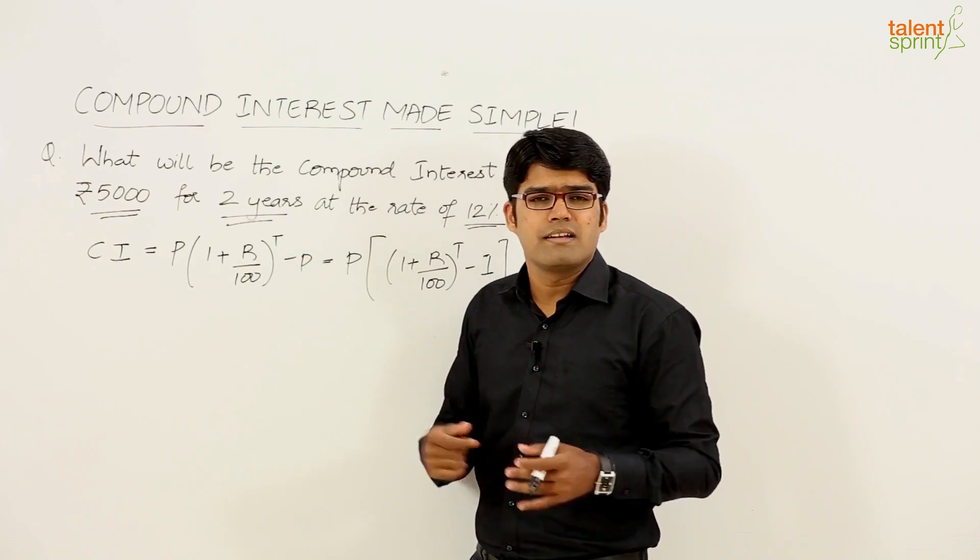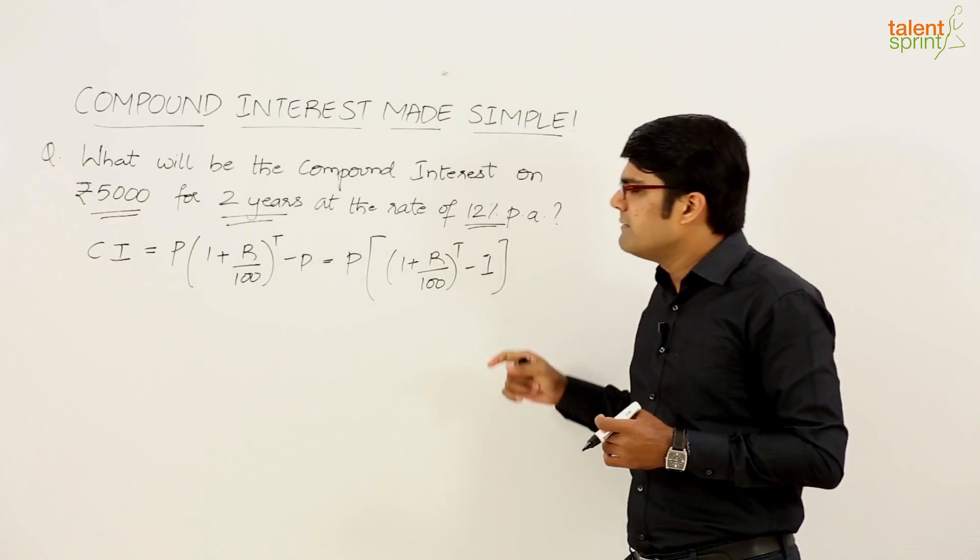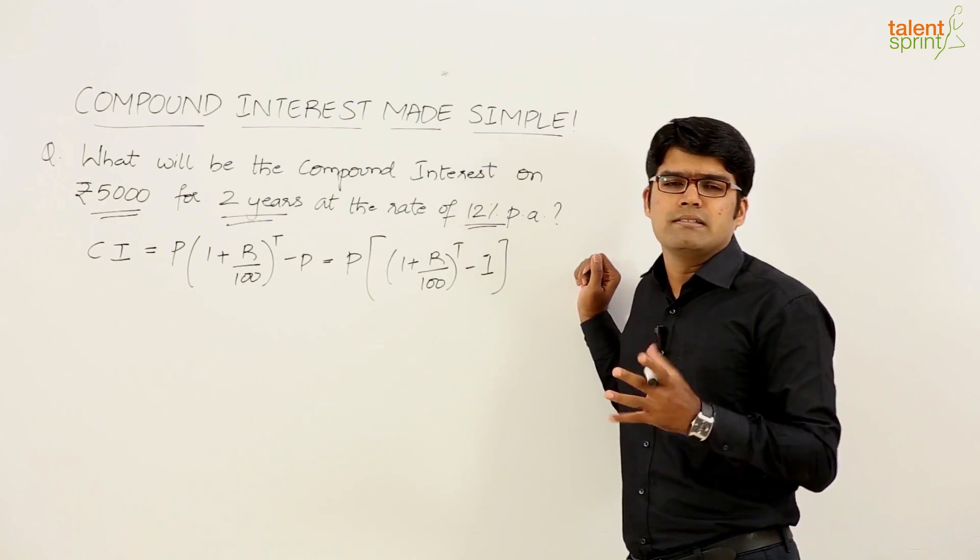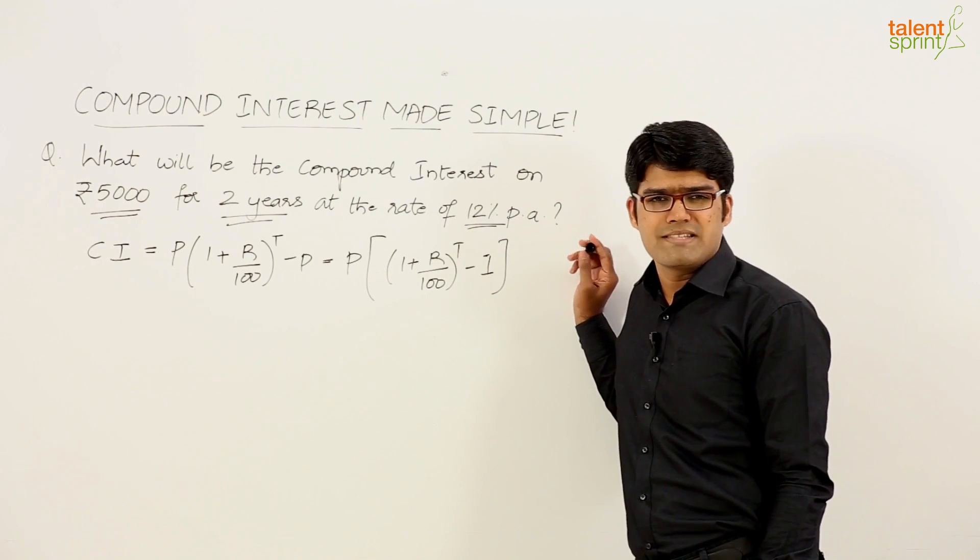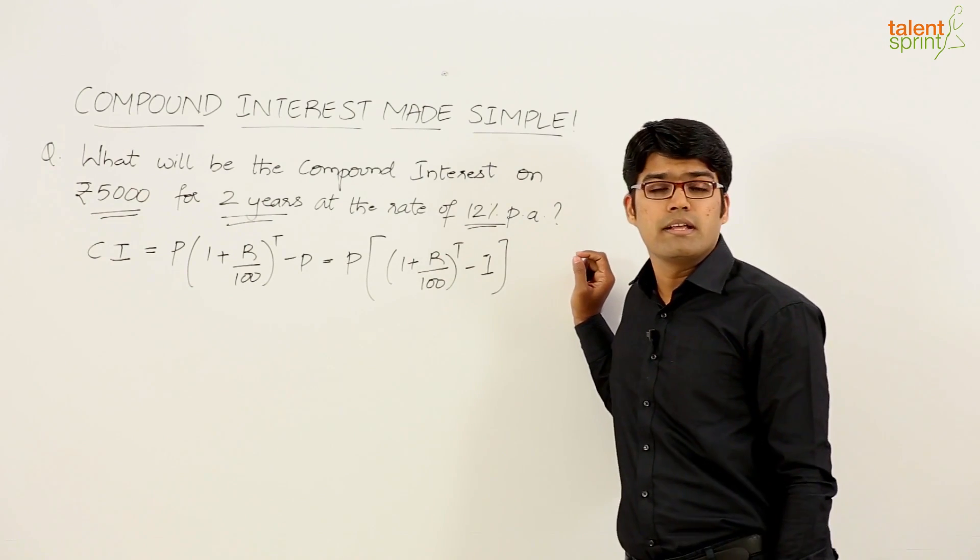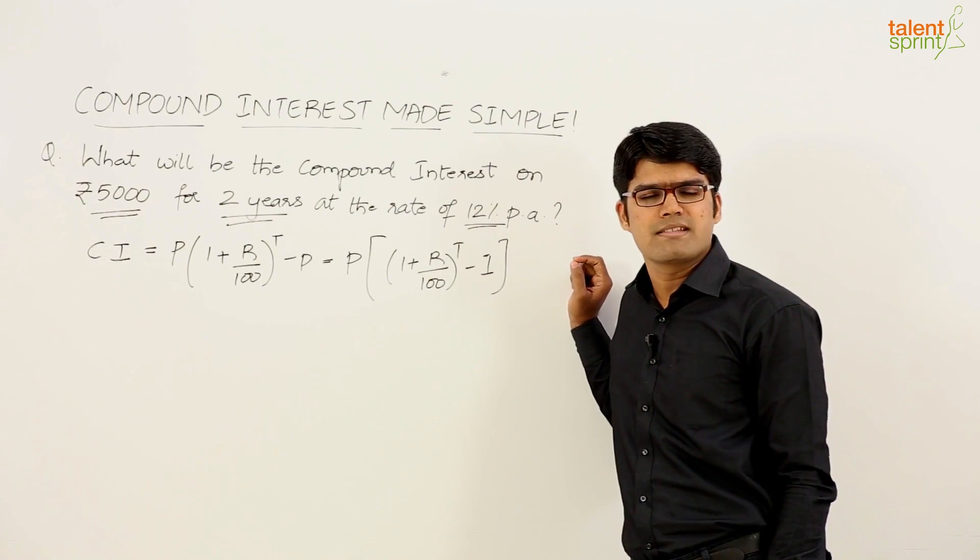56 by 50 whole to the power of 2 which means 56 into 56 upon 50 into 50. That makes it a little complex and anyway you will be able to simplify this and arrive at the answer but that would take easily about 60 to 75 seconds, and because the given values here are not really complex you can get it in about 60 to 75 seconds.